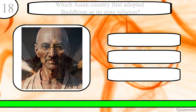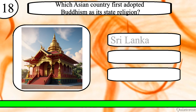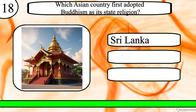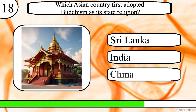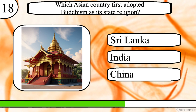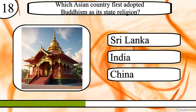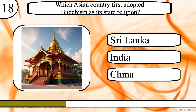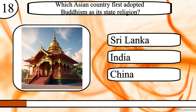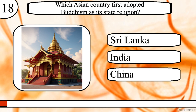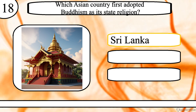Question 18. Which Asian country first adopted Buddhism as its state religion? Sri Lanka, India or China? The correct answer is Sri Lanka.